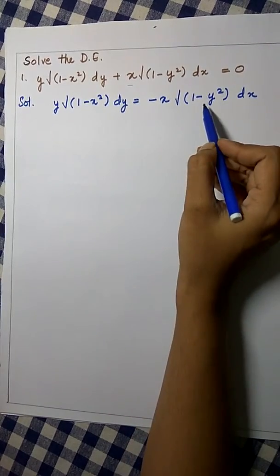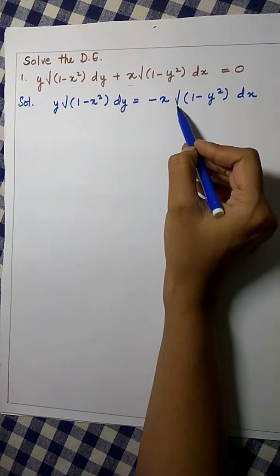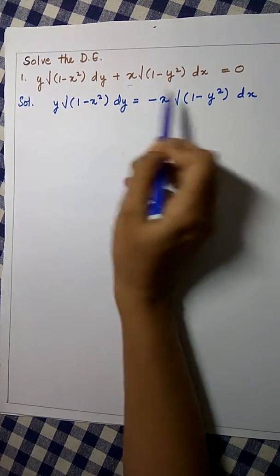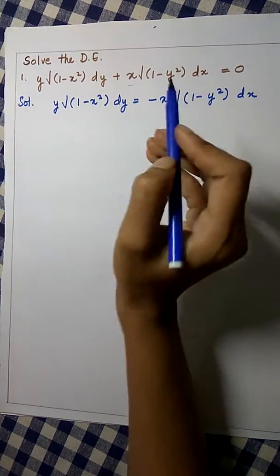Now, let us separate the x and y terms. It is very easy. We will take root of 1 minus y square to the left hand side and root of 1 minus x square to the right hand side.